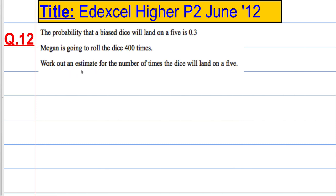The key word here is estimate. When dealing with probabilities and it says estimate, normally what you do is take the number of times you're going to do the experiment—in this case, 400—and multiply that by the probability that it will happen.